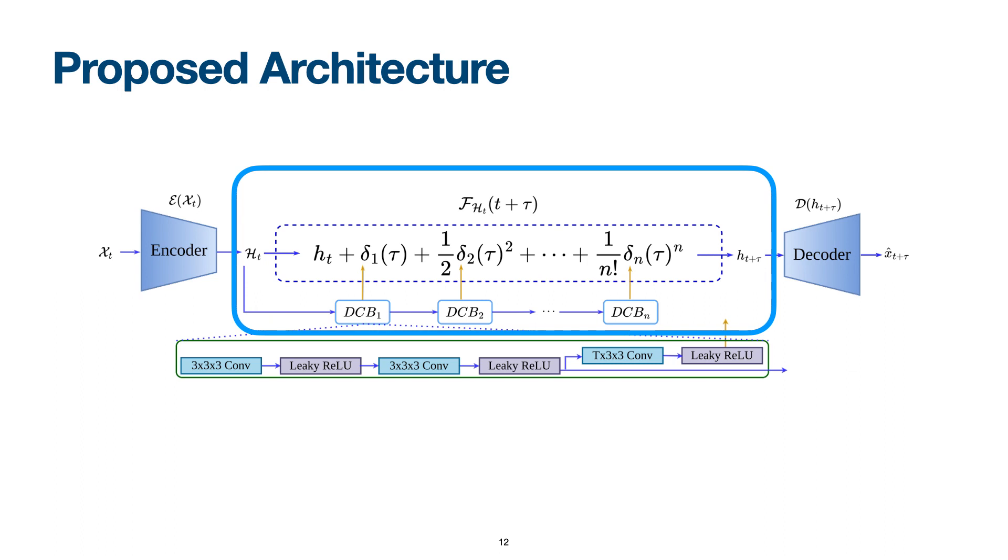The temporal model models the future temporal dynamics and forecasts the frame at its future temporal step t plus tau in the embedded space, called h t plus tau. We are estimating the high-order Taylor terms recursively. To compute each Taylor term, a convolutional block, called delta convolutional block, or in short DCV, is proposed.